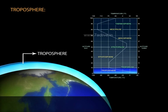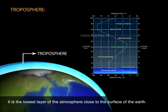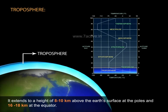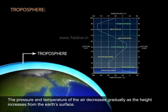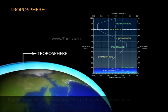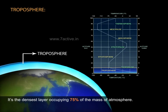Troposphere. It is the lowest layer of the atmosphere close to the surface of the Earth. It extends to a height of 8 to 10 kilometers above the Earth's surface at the poles, and 16 to 18 kilometers at the equator. The pressure and temperature of the air decreases gradually as the height increases from the Earth's surface. It's the densest layer occupying 75 percent of the mass of atmosphere.